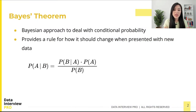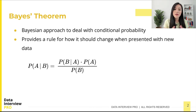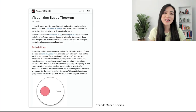Bayes' theorem is a Bayesian approach dealing with conditional probabilities, and it provides a mathematical rule for how you should change your existing beliefs when presented with new data or information. It states that the conditional probability of event A, based on the occurrence of another event B, is equal to the likelihood of event B given event A, multiplied by the probability of event A.